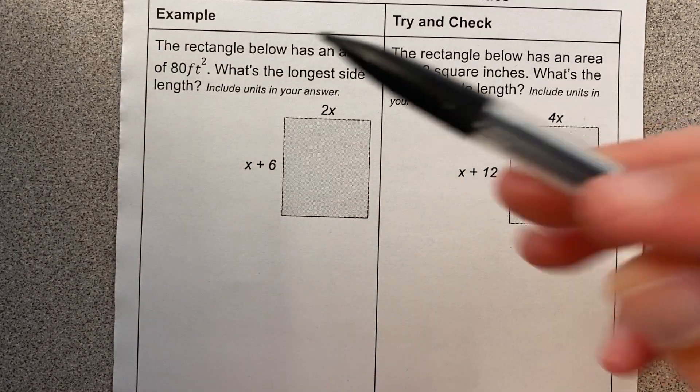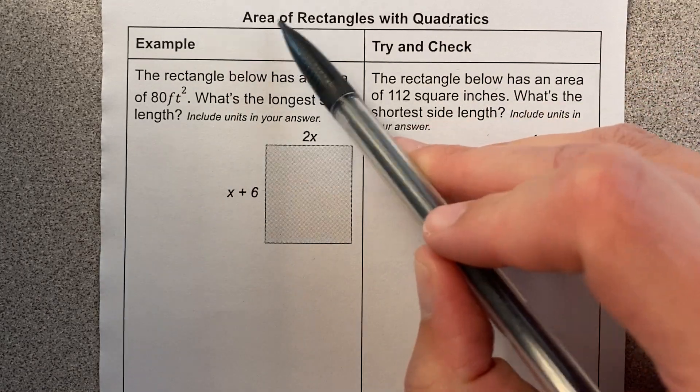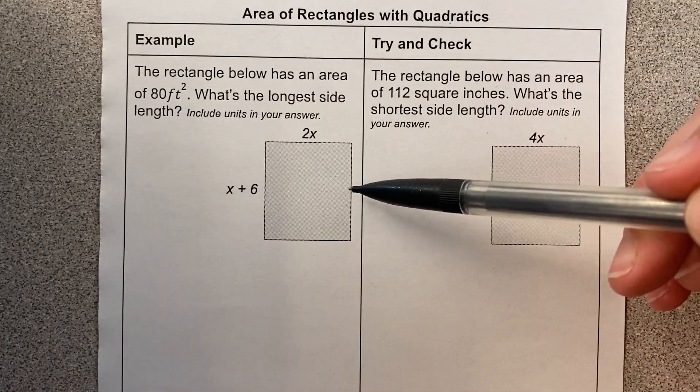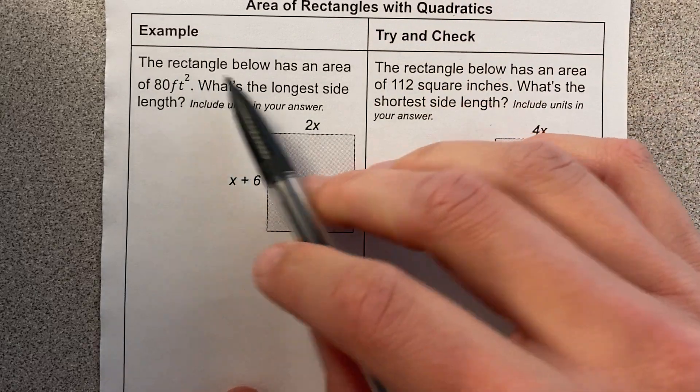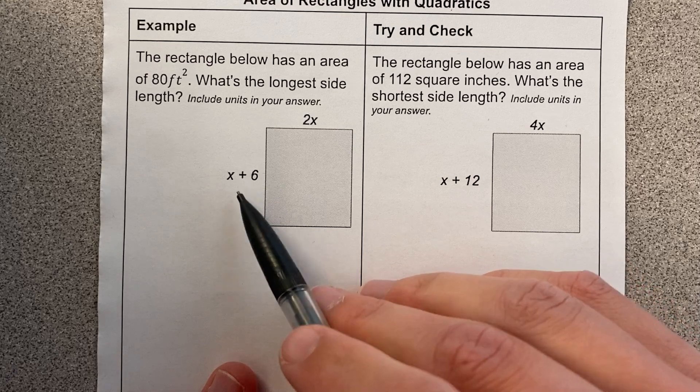All right, we're going to merge the two things we've been learning, quadratics and in mindsets we've been learning about area. So let's talk about area rectangles with some quadratics. The rectangle below has an area of 80 square feet. What's the longest side length? Okay, so here's what we know.